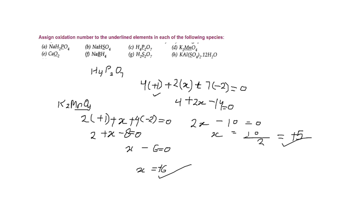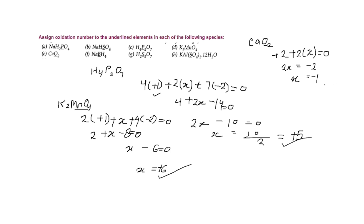The next question is CaO₂. We need to calculate the oxidation state for oxygen. Calcium shows plus two oxidation state. There are two oxygens, and we consider x for the oxidation state. Setting equal to zero: plus two plus 2x equals zero, so 2x equals minus two, x equals minus one. The oxidation state of oxygen is minus one.